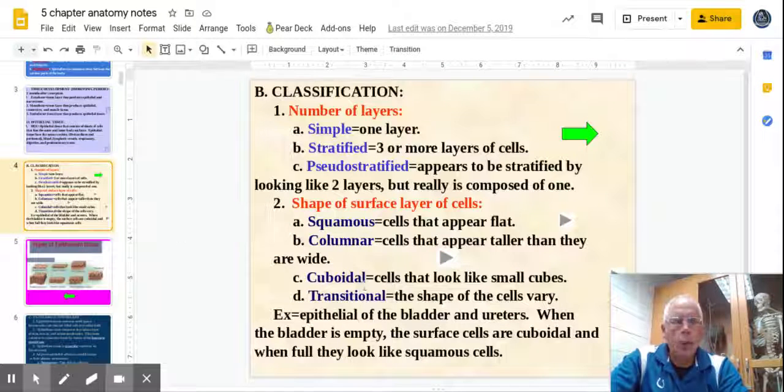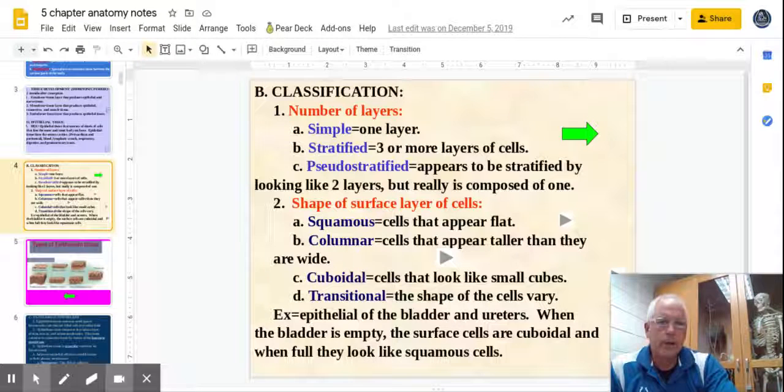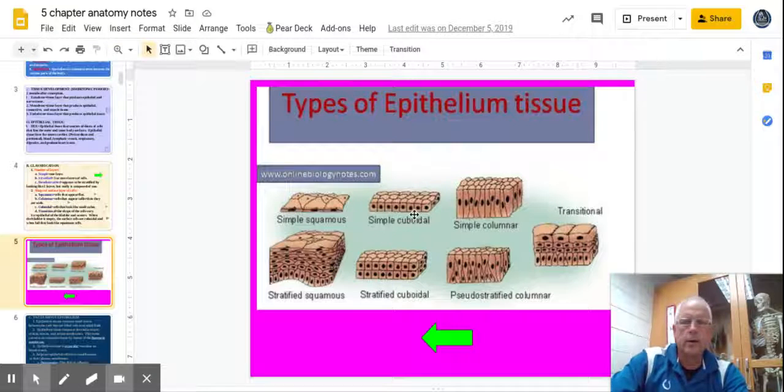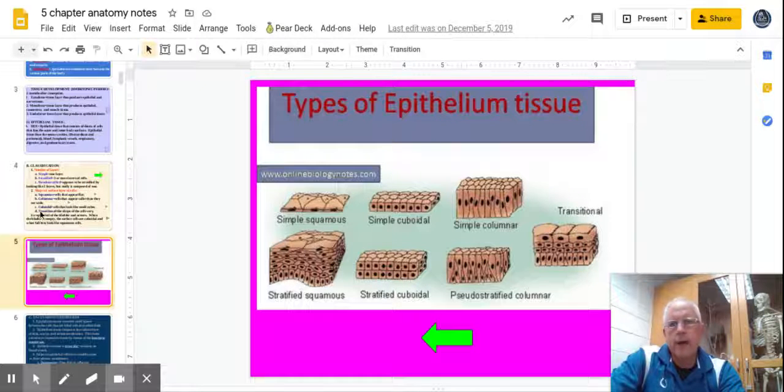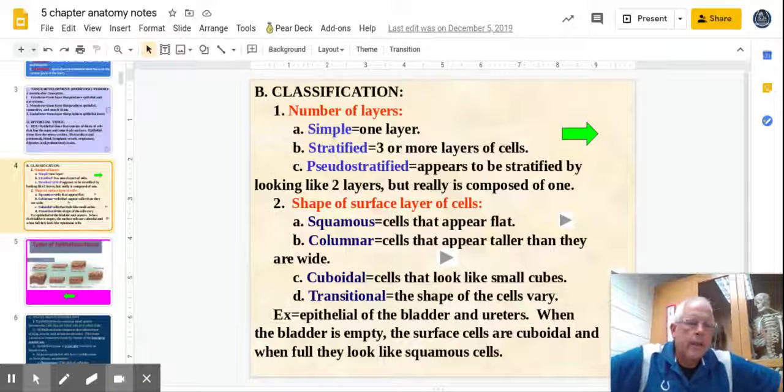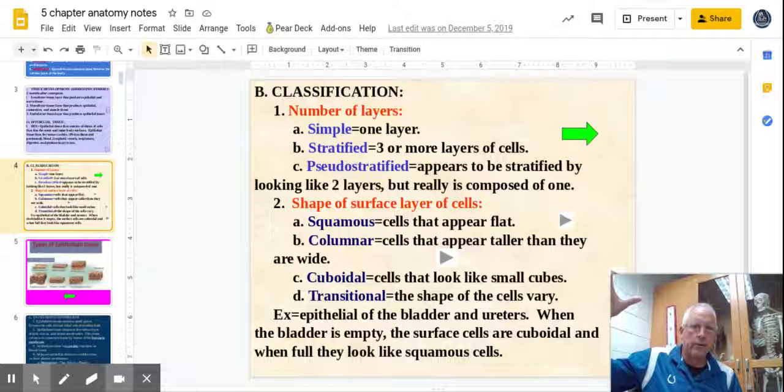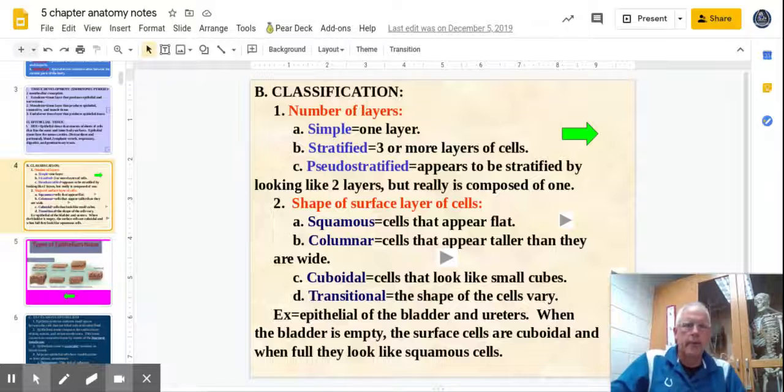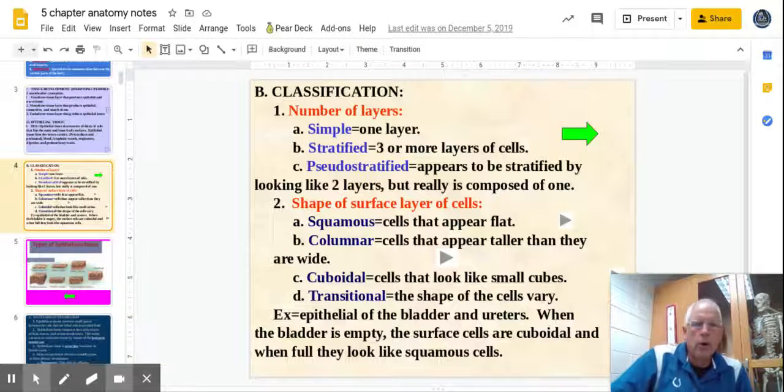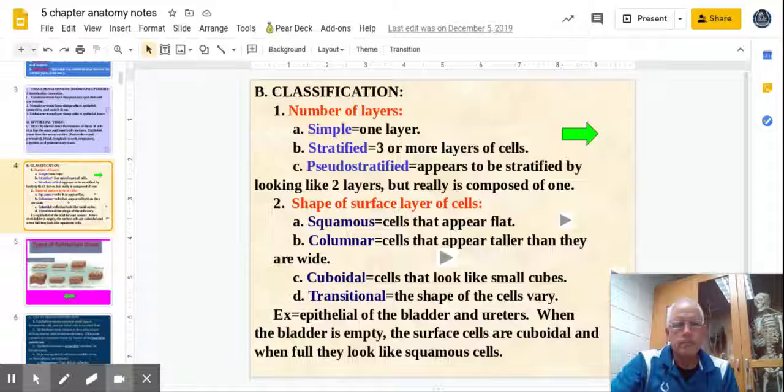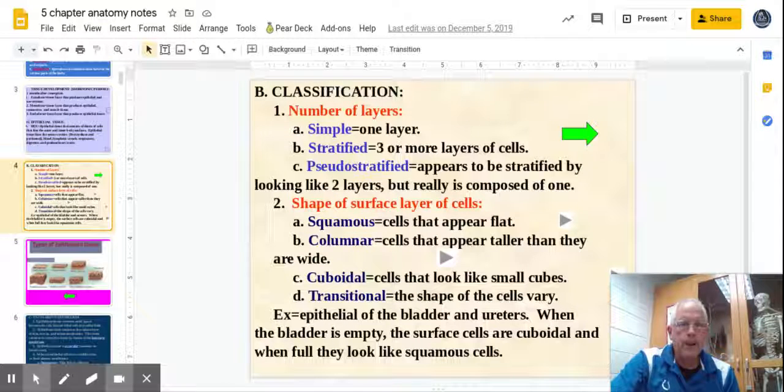And then we have cuboidal. Cuboidal look like ice cubes. The only best way to describe them look like little cubes. You can see them here. And we're going to look at these under the microscope. You'll see what I'm talking about. So you're looking for flat, tall, skinny, or cubes. And then we got the odd one: transitional. That's where the shape of cells vary. Think of your bladder. If your bladder is full, they're going to be pancaked. They're going to be squamous. If your bladder is empty, they kind of bounce back and they look like cuboidal. So it's going to go, depending on the condition of your bladder, they're either going to be cuboidal or squamous.